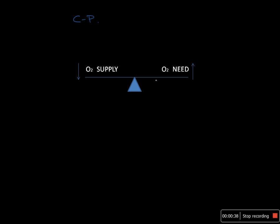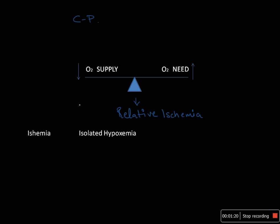Generally this imbalance is created when there is a decrease in oxygen supply or when there is an increase in oxygen need. For example, if a piece of myocardium has its supplying coronary artery obstructed, oxygen supply is decreased. Alternatively, hypertrophied myocardium has increased oxygen demand. Ultimately this produces relative ischemia, leading to ischemic heart disease, which can present as myocardial infarction.